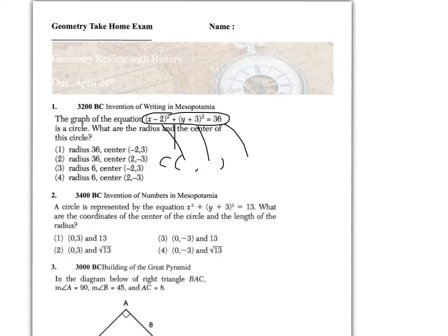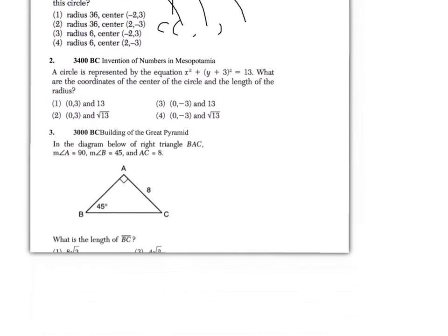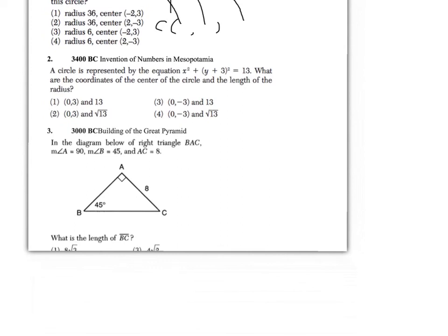For question number two — in 3400 B.C., numbers were invented. For this question, again, same thing with a circle. These two areas here will help you figure out what your center has to be. And then you're going to have to do something with 13 to determine the radius.